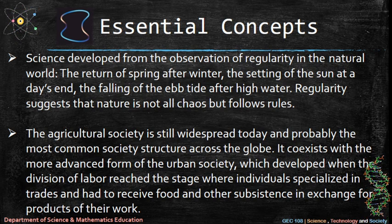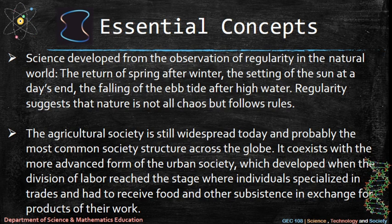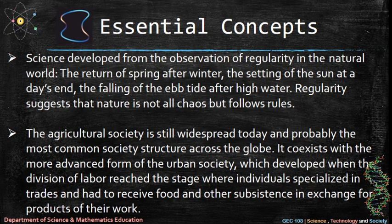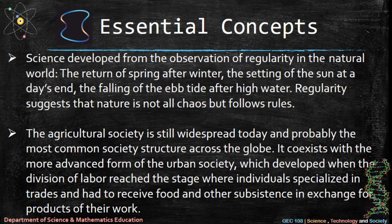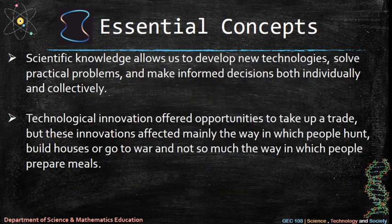The return of spring after winter, the setting of the sun at a day's end, the falling of the ebb tide after high water — regularity suggests that nature is not all chaos but follows rules. The agricultural society is still widespread today and probably the most common society structure across the globe. It coexists with the more advanced form of the urban society, which developed when the division of labor reached the stage where individuals specialized in trades and had to receive food and other subsistence in exchange for products of their work.